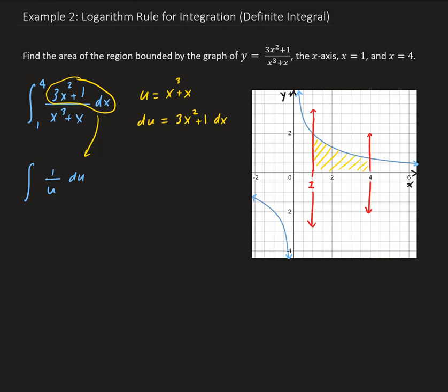All right, so now we have to change the limits of integration. For x equals 1, u is going to be equal to 1 cubed plus 1. So that's going to give us 2, so we're going to get 2 here.